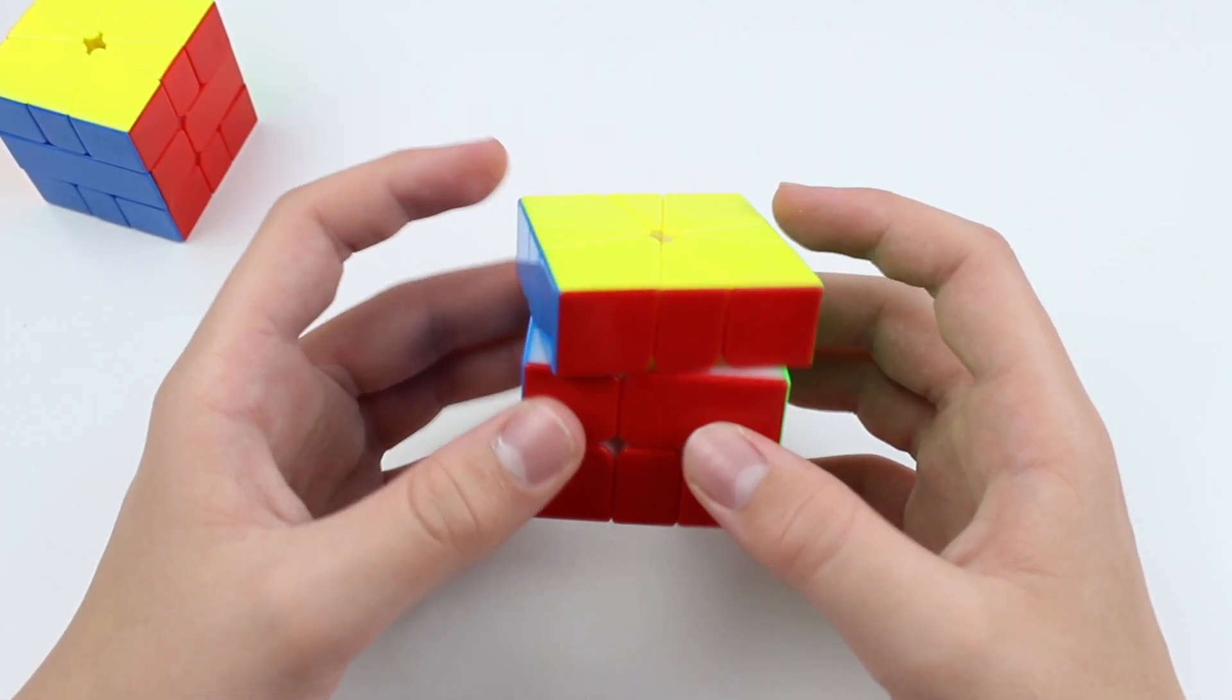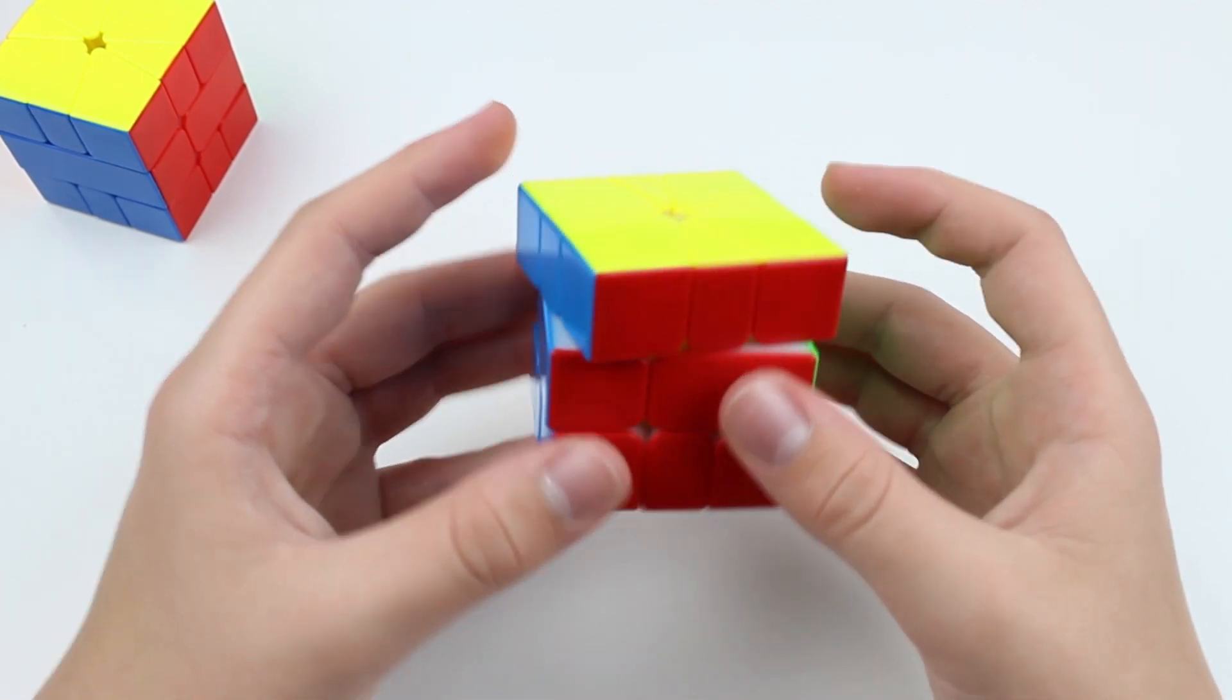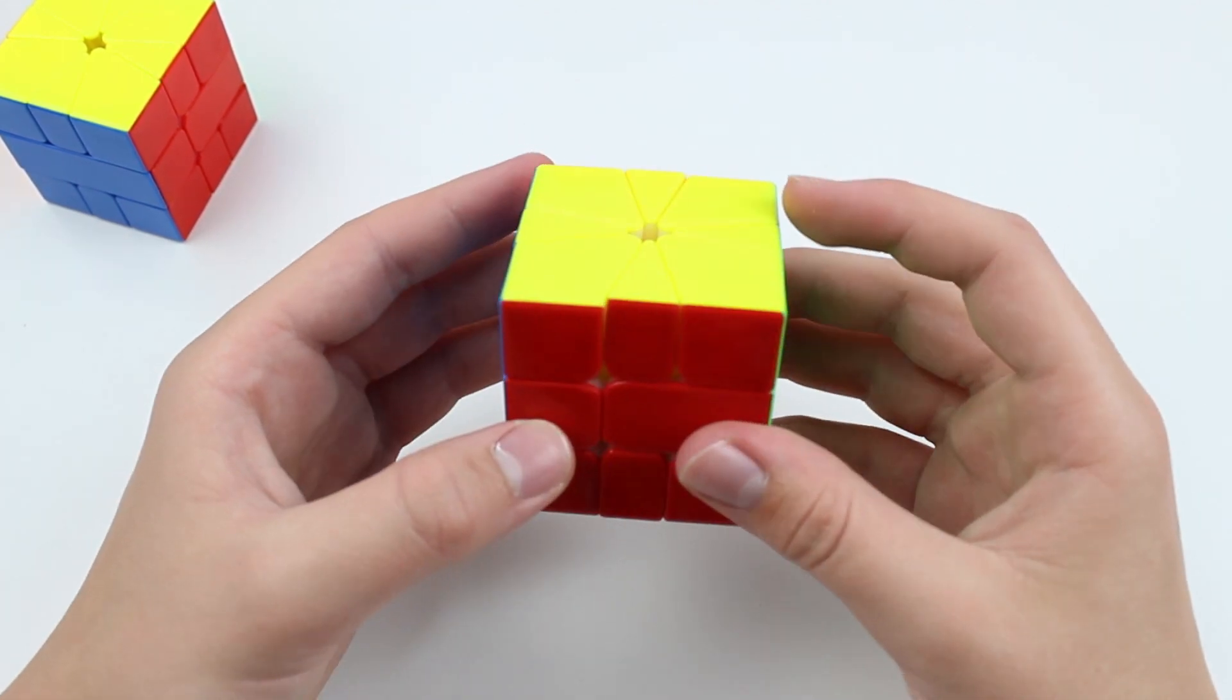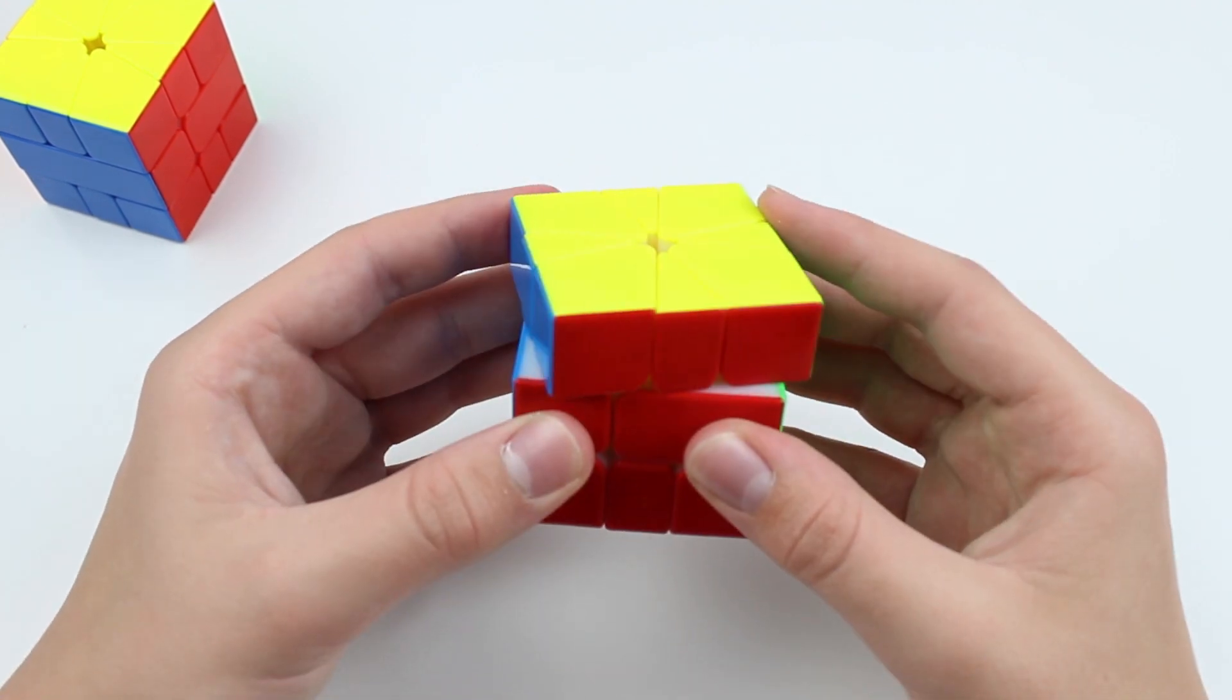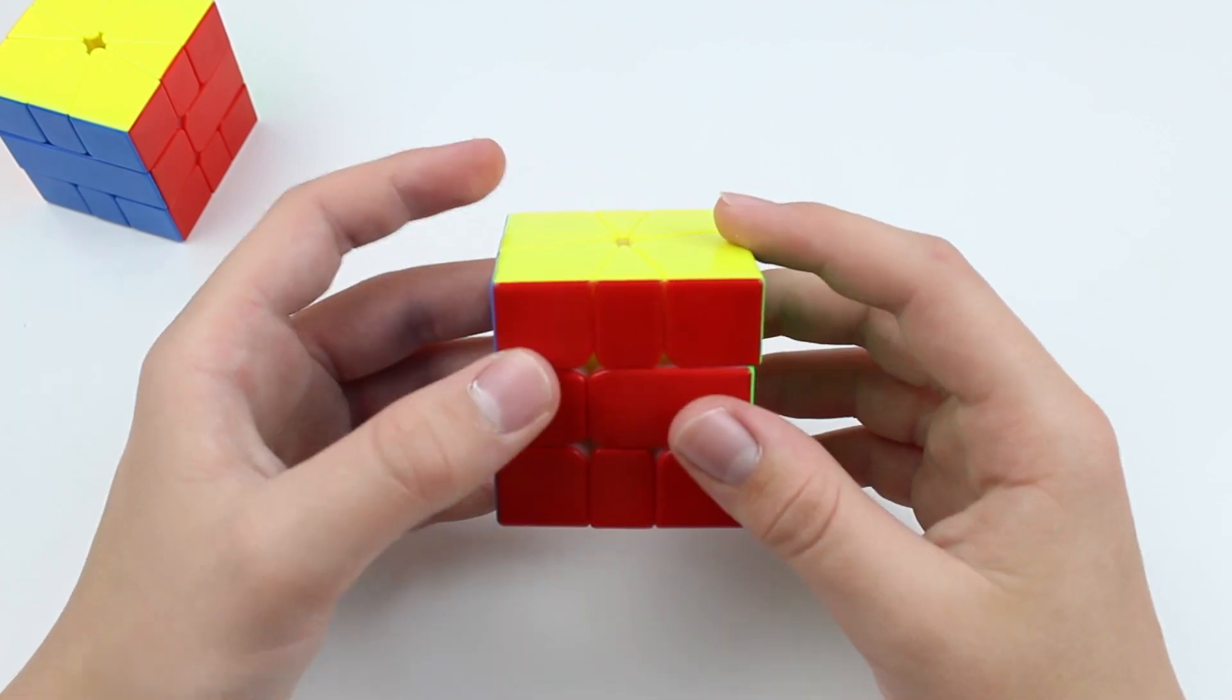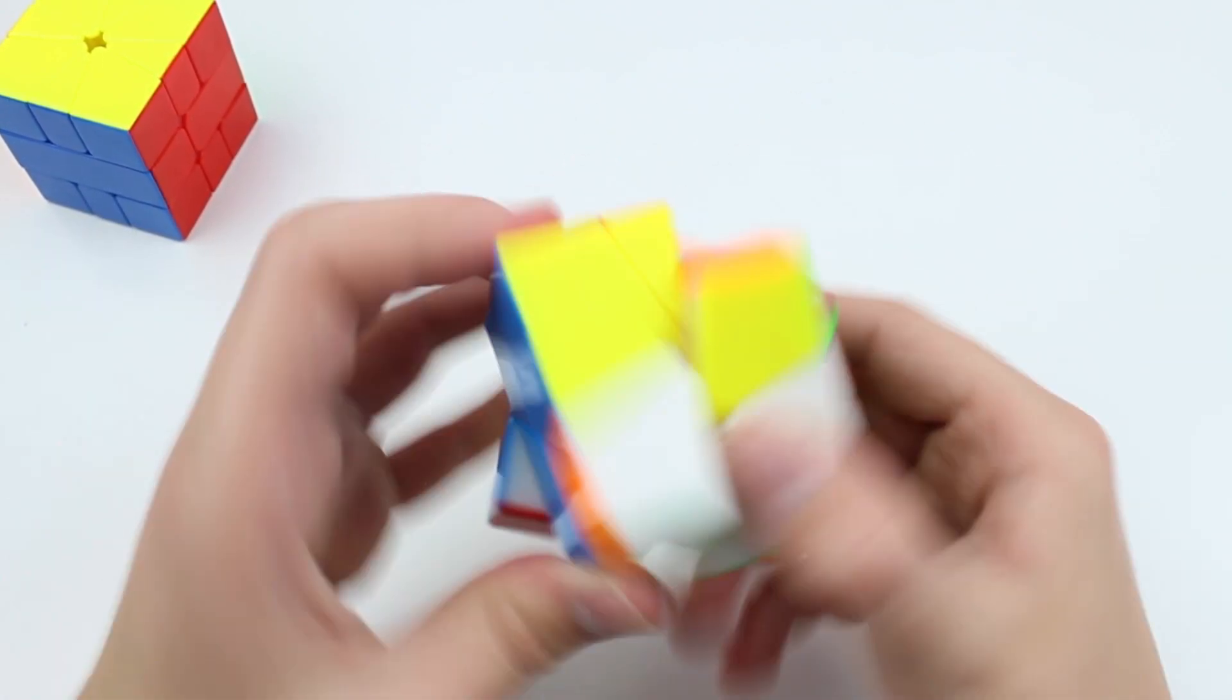This cube does not have very good corner cutting out of the box, but it gets quite a bit better once you loosen it a bit. There's still a certain point where it really just can't go past anymore and can't corner cut anymore, but the magnets make it much easier to control as well.